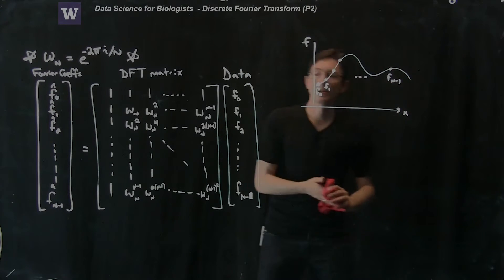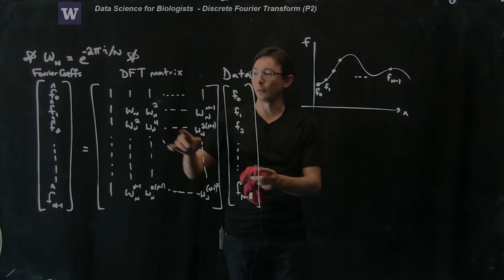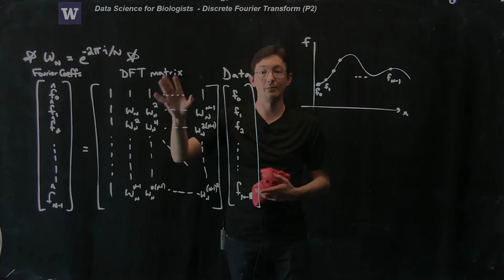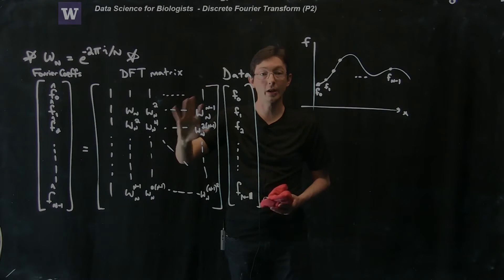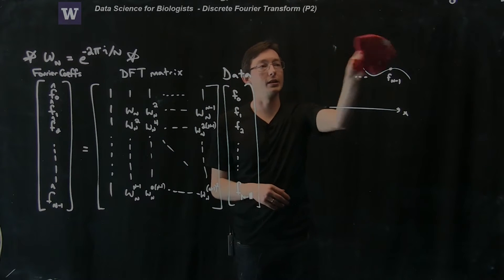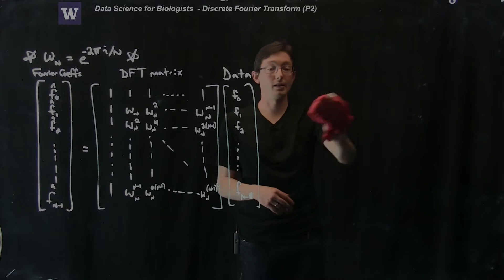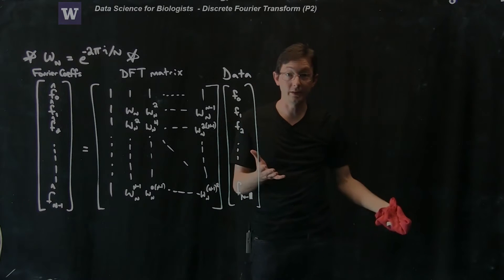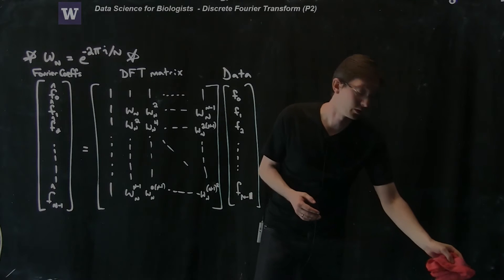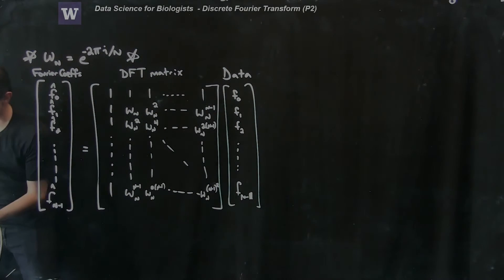The Fourier coefficients have a really important physical meaning: they are the amplitudes of the different frequency sine and cosine waves you would need to add up to perfectly reconstruct the data. In the next part of this segment we're going to code this discrete Fourier transform matrix up in MATLAB, look at it — it looks pretty cool — and then in the next segment we'll use it on real data to filter, compress, and do all kinds of neat things.